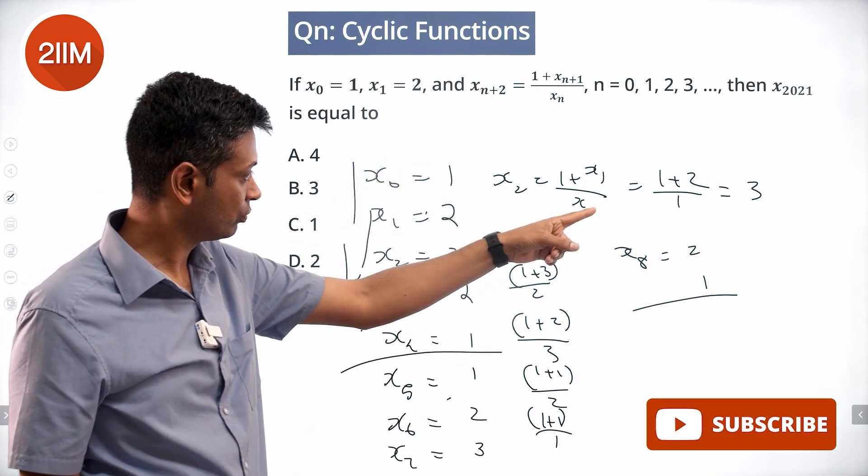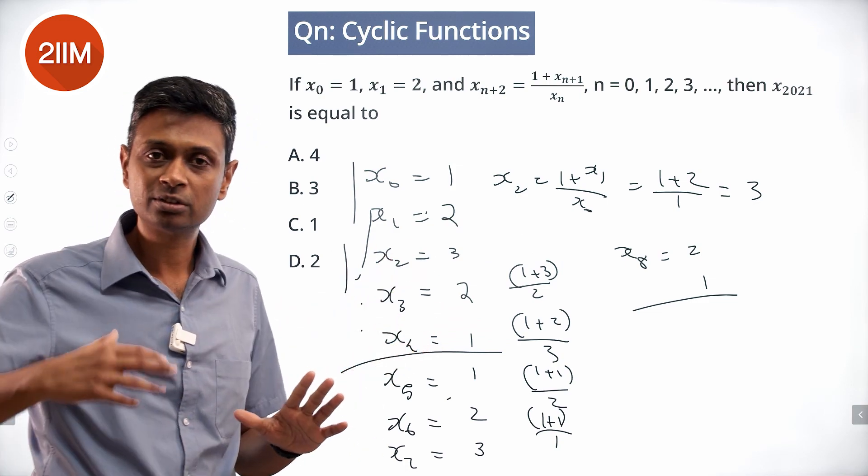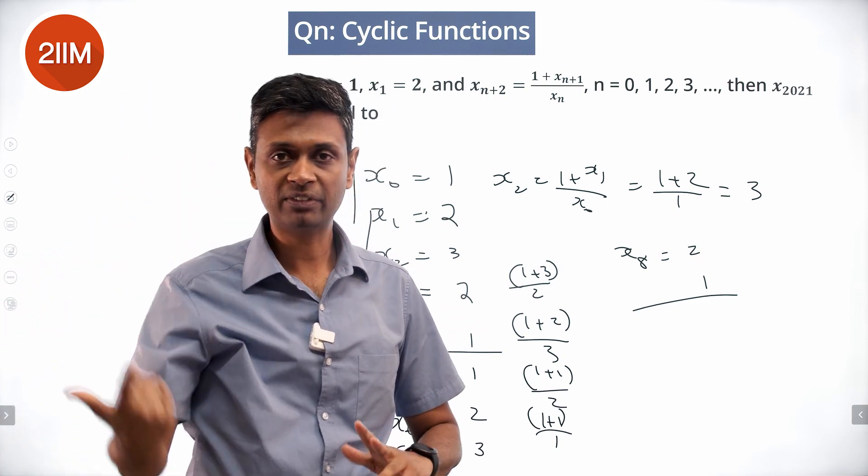A 1, 2 generates a 3. A 3, 2 generates a 2. A 2, 1 will generate a 1. So the moment 2 elements repeat, everything will repeat after that. So this goes in cycles of 5.